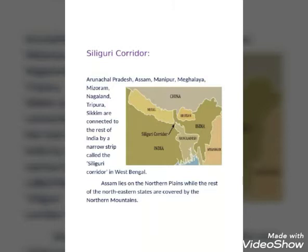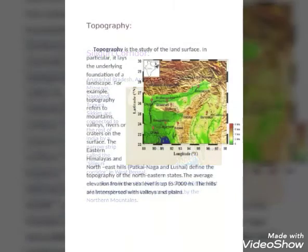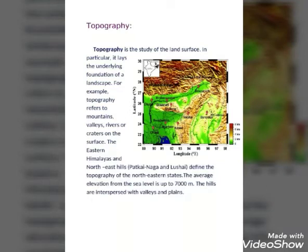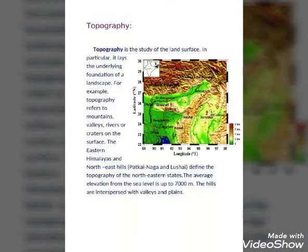Assam lies on the Northern Plains, while the rest of the North Eastern states are covered by the Northern Mountains. Looking at the map, you will see different colors representing different terrain types. The Eastern Himalayas and Northeast Hills — Patkai, Naga, and Lusai — define the topography of the North Eastern states.